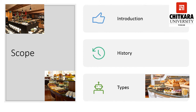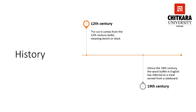A buffet is a display of food on a particular station for the guest to choose. The guest has two options in a restaurant: one is an a la carte menu, where the guest can choose food individually and each item is charged individually. A buffet is a set of courses laid out on the counter for the guest to choose, and the pricing depends on how lavish or small the buffet is.